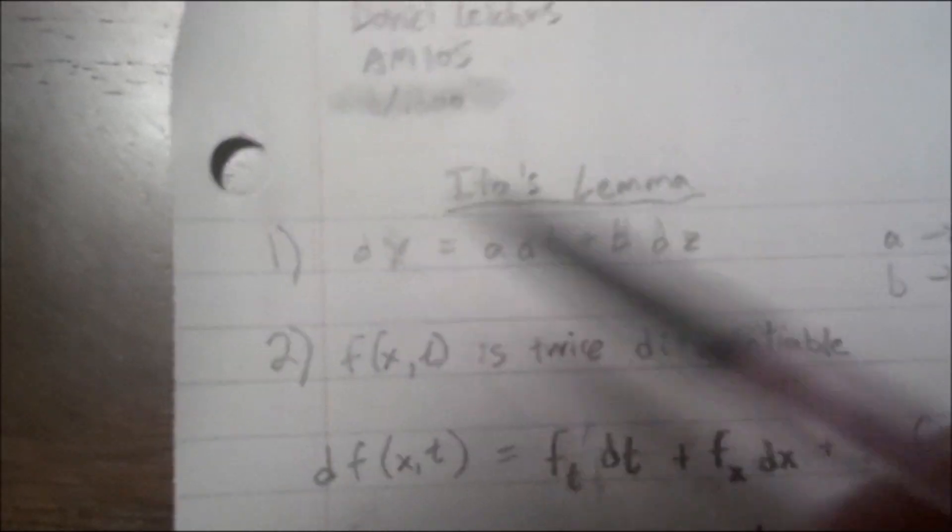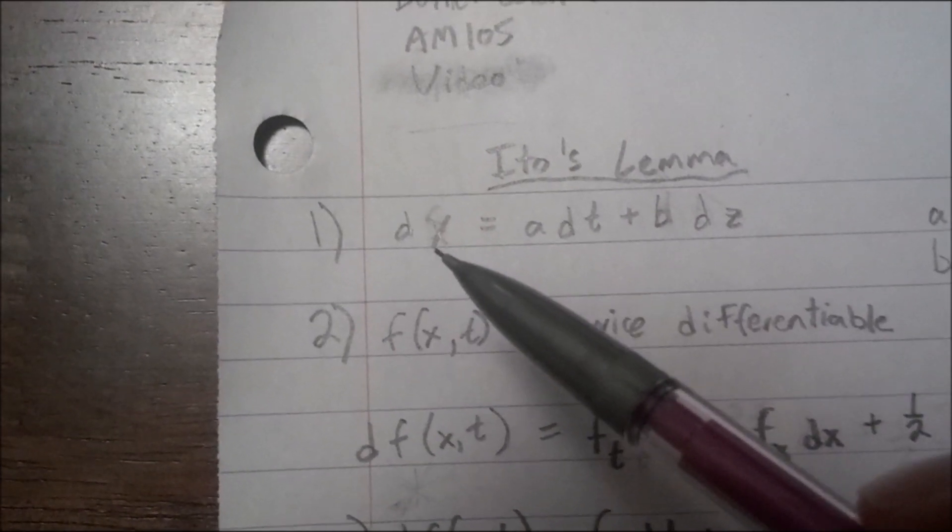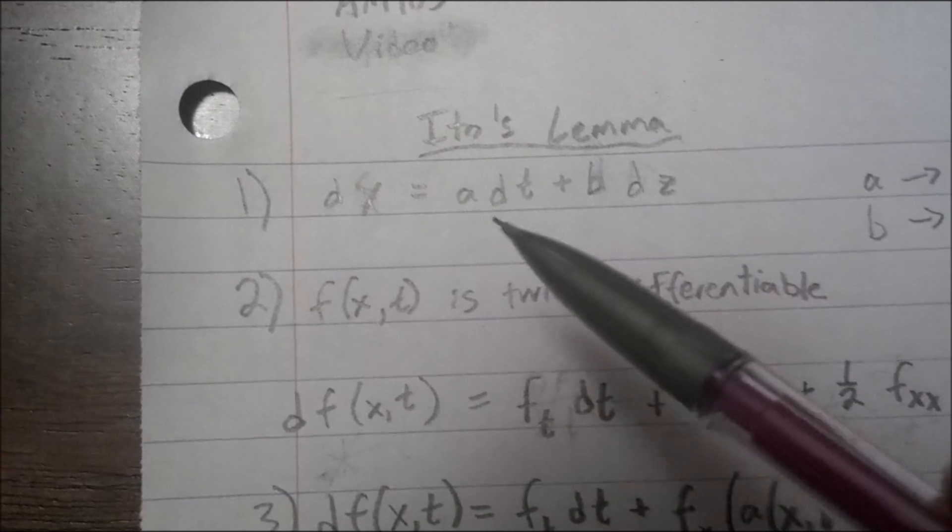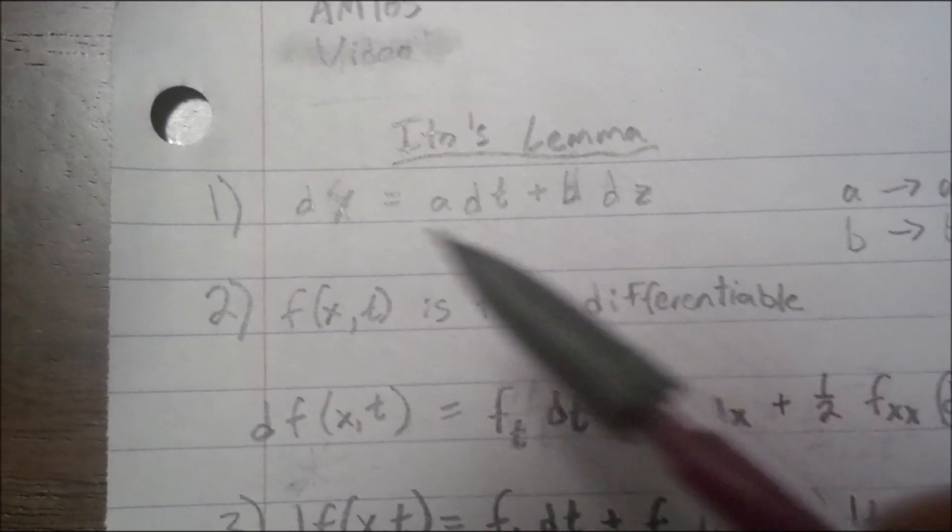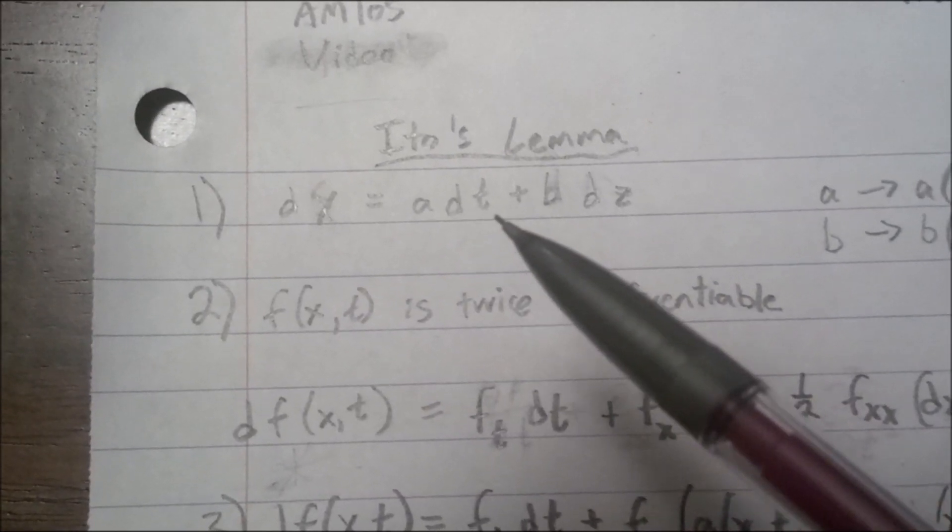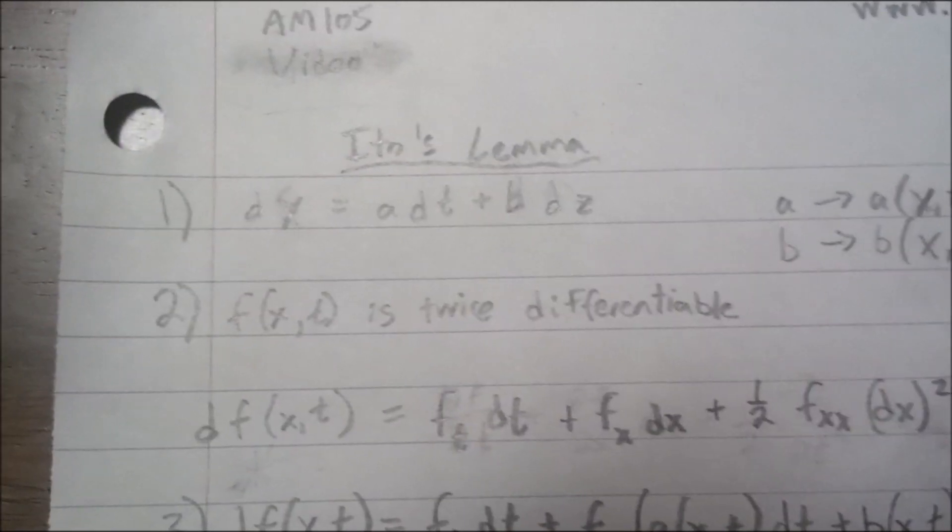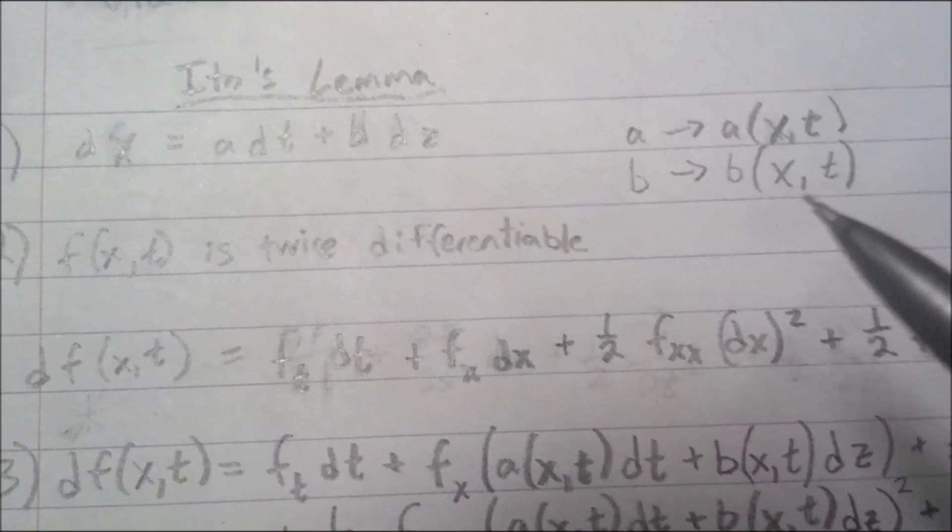So let's say that we have a differential equation of a function x, and we say there's a component that depends on time and depends on randomness. So differential with respect to x equals a differential with respect to t plus b differential with respect to z, where a can be a function of x and t, and b can be a function of x and t as well.